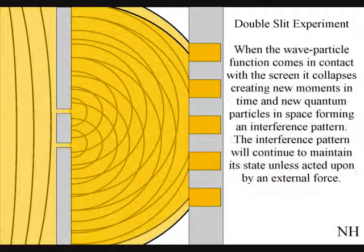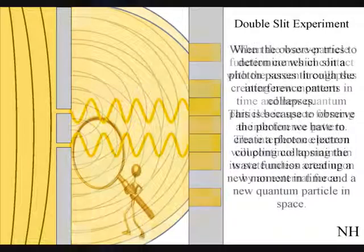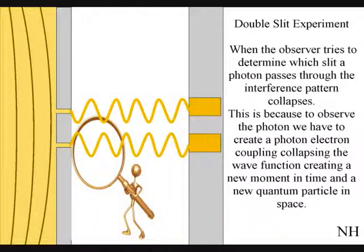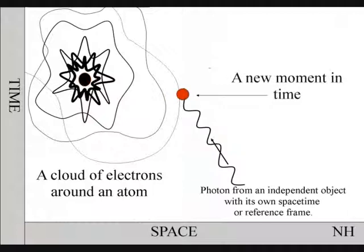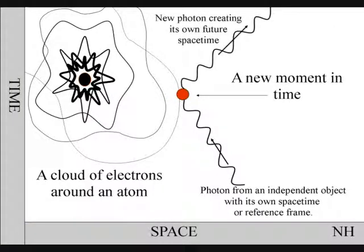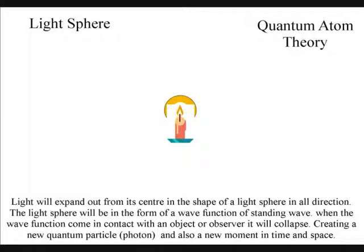When the observer tries to determine which slit a photon passes through, the interference pattern collapses. This is because to observe the photon, we have to create a photon-electron coupling, collapsing the wave function, creating a new moment in time and a new quantum particle in space. Just like in Newton's first law of motion, the interference pattern will continue to maintain its state unless acted upon by an external force.